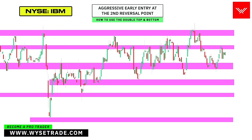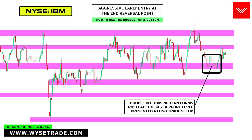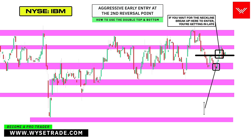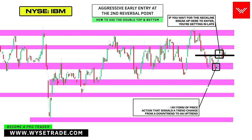This is the IBM stock. This double bottom here at a key support level presented a long trade setup. If you waited for a neckline break, you wouldn't be able to get in until all the way up here. So we want to get in early right down here at this second reversal point of the double bottom pattern. After you had the long wick candle, you want to look inside of it on a lower timeframe for any form of price action that signals a trend change from a downtrend to an uptrend.